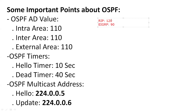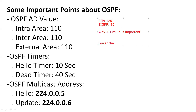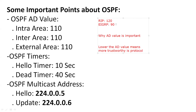For internal networks, EIGRP has an AD value of 90. The AD value is important because a lower AD value means the protocol is more trustworthy. OSPF has an AD value of 110. Comparing all protocols, EIGRP is best but limited to Cisco devices, which is why OSPF with the second lowest AD value of 110 is widely used.